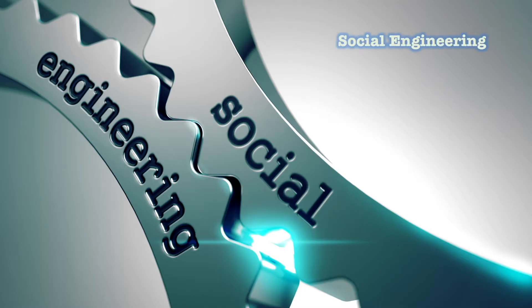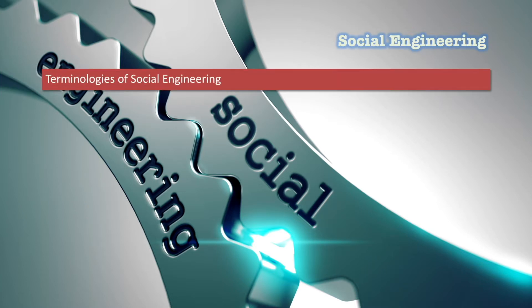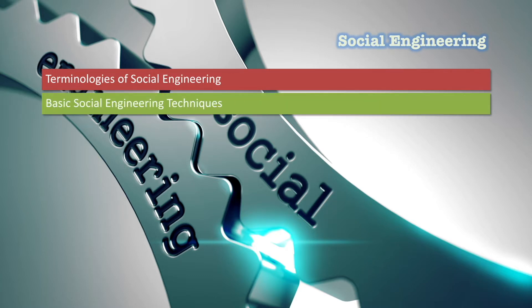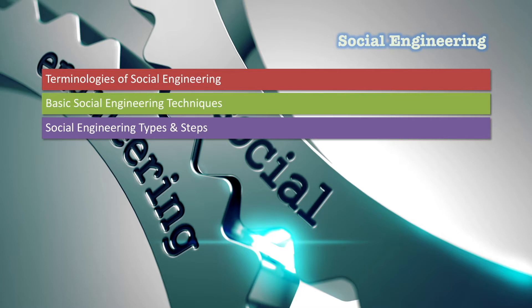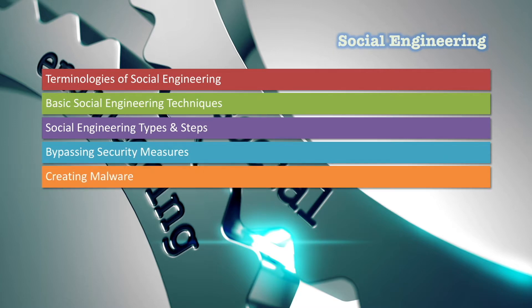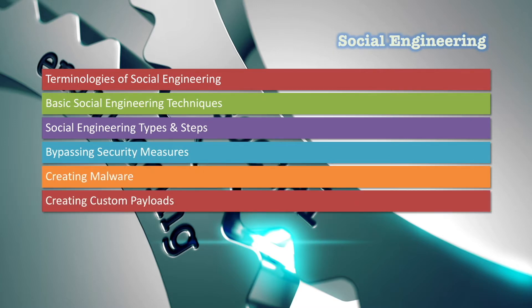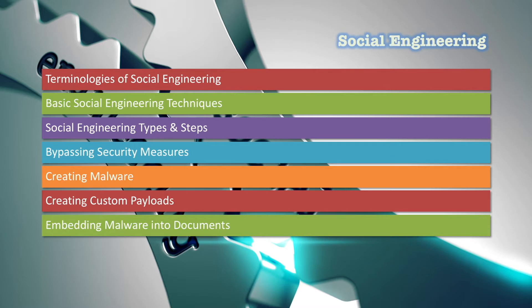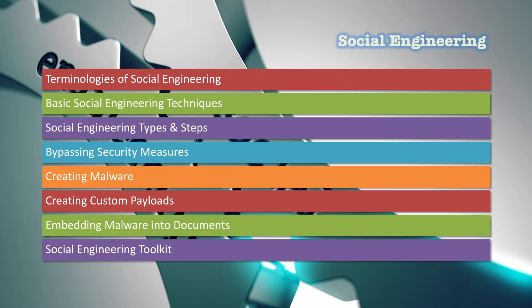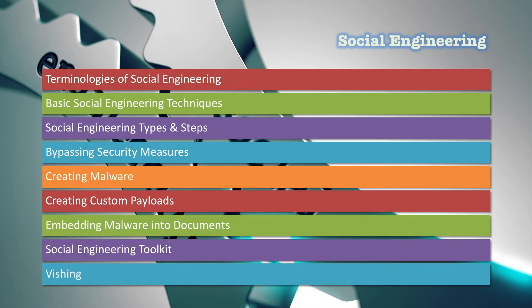The Social Engineering section is where we're going to use human weaknesses together with the weaknesses of IT systems. You'll learn the terminologies and definitions, basic techniques, the types and steps of social engineering attacks, how to bypass security measures, how to create malware, how to create custom payloads to use inside the malware, how to embed malicious code into documents, the social engineering toolkit, and social engineering via phone — also known as vishing.